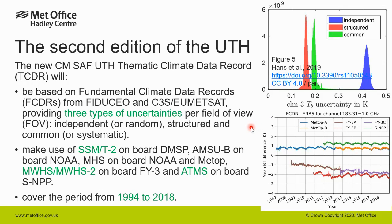We are also going to use further satellite instruments like SSMT-2, MWHS, MWHS-2, and ATMS, together with AMSU-B and MHS. The performance of these new FCDRs against ERA-5 simulations for the upper tropospheric humidity channel can be seen in this figure. The new TCDR will cover the period from 1994 to 2018.